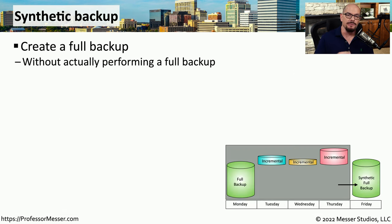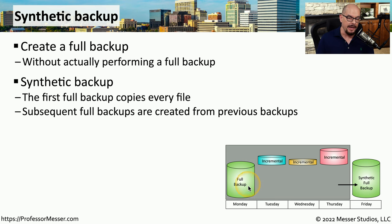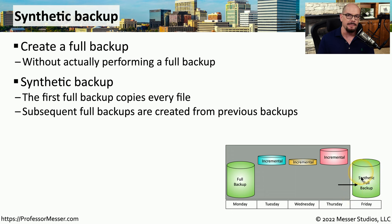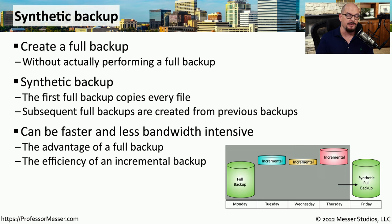Earlier we talked about a full backup and how it's very time consuming to copy all of the data. But what if there was a way to create a full backup without actually copying all of the data from that system? We can do that through something called a synthetic backup. With a synthetic backup, we create the first backup and then have incremental backups that occur after that. Then when we would like to create a new synthetic full backup, we simply take all of those data sets we had previously and combine them all together into what ultimately becomes the synthetic full backup. This is obviously much faster than performing a full backup, because we already have all of these data sets backed up — we just need to combine them to create that synthetic full backup.